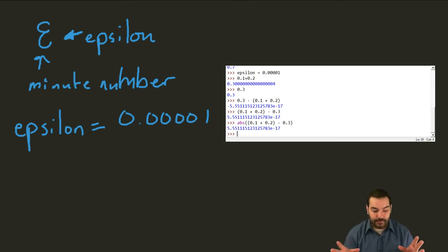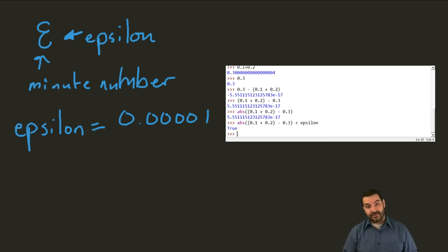So all of a sudden, we can keep going. Now, all of a sudden, to the negative 17th power. All of a sudden, this is a very small number. How small? Well, is it smaller than my epsilon? And if I do this math equation that I'm looking at right now, yes, it is.